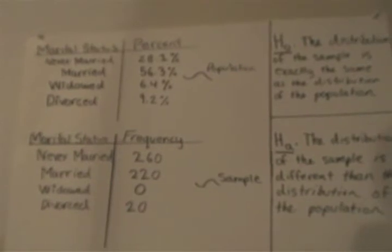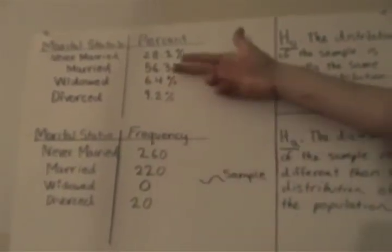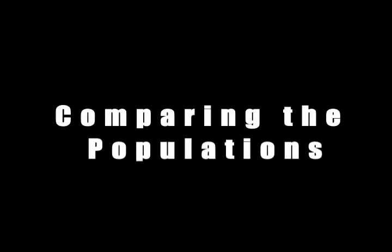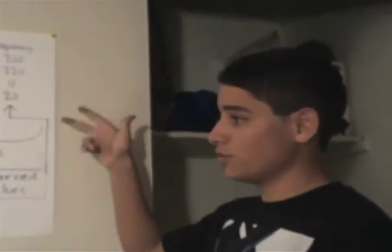So because this is our population, our expected value for 500 for never married would be 28.1%. So, basically we're comparing this against the population to see how valid the population is.